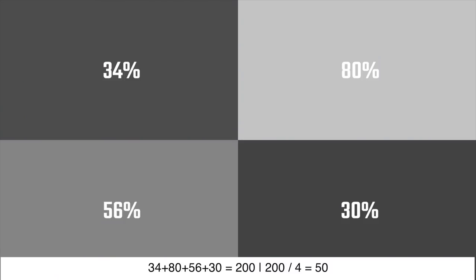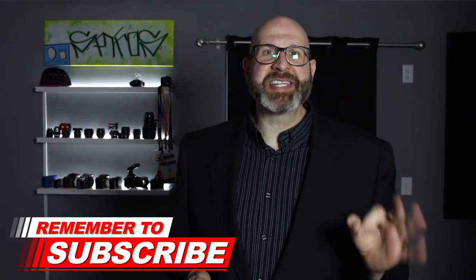We're going to start with metering. Your camera is stupid because of how metering works. Metering is how your camera calculates the exposure of a scene. The camera measures the brightness values in the scene based on your current ISO, aperture, and shutter speed settings, then calculates the average brightness of the scene. What the camera meter wants is for the average brightness of the scene to be 50%.